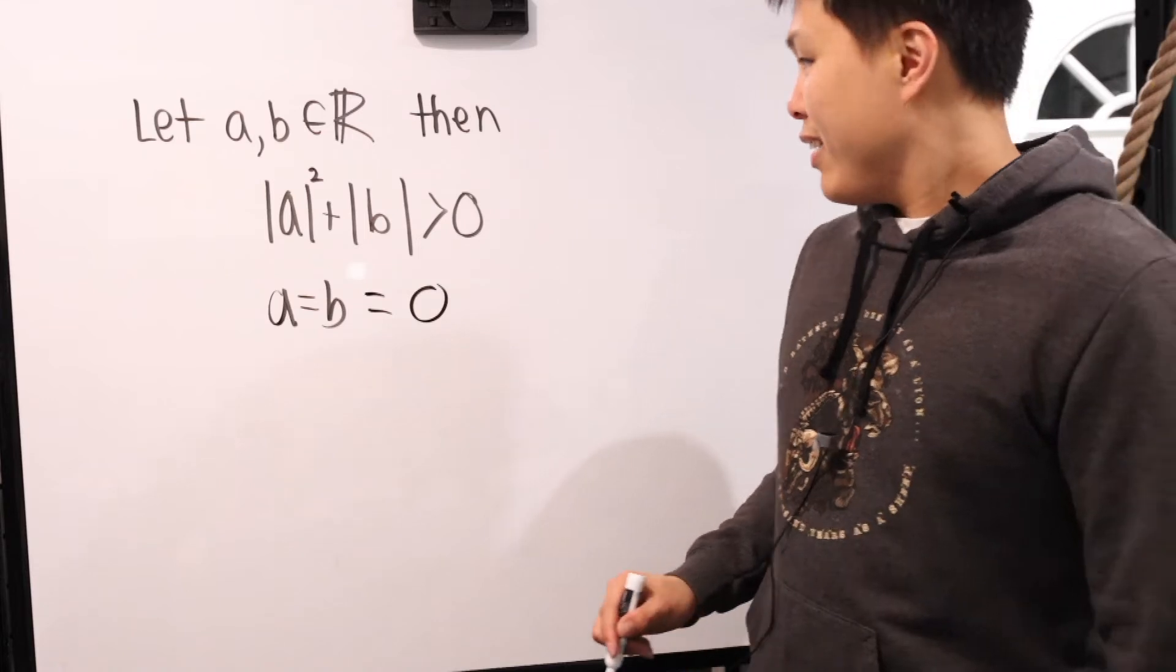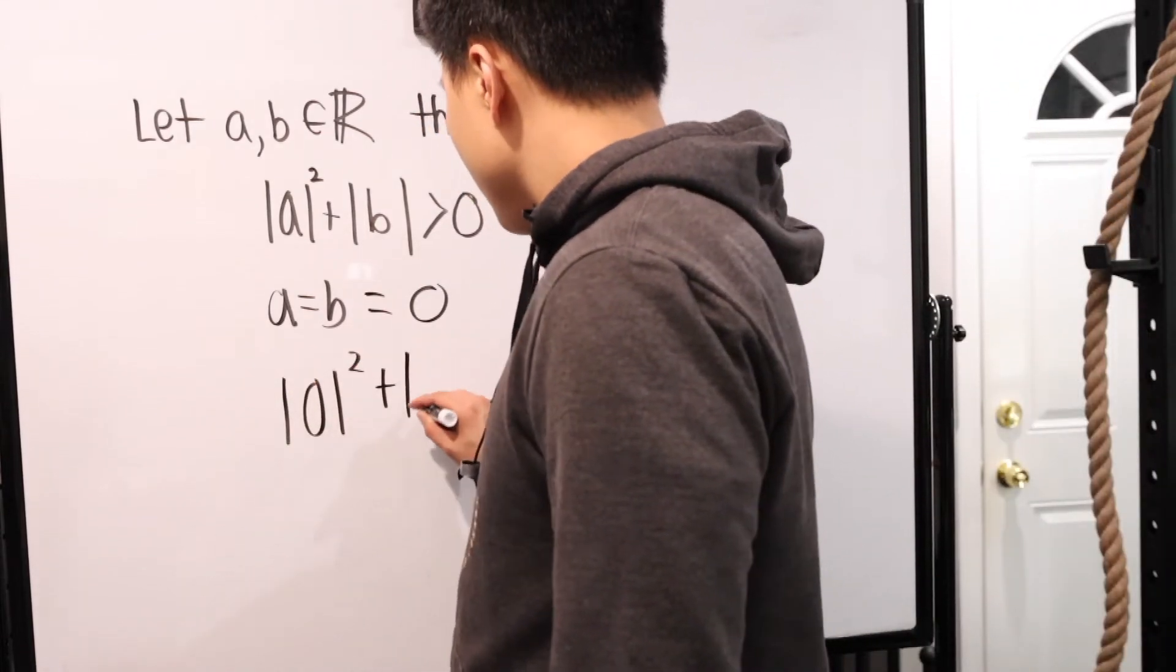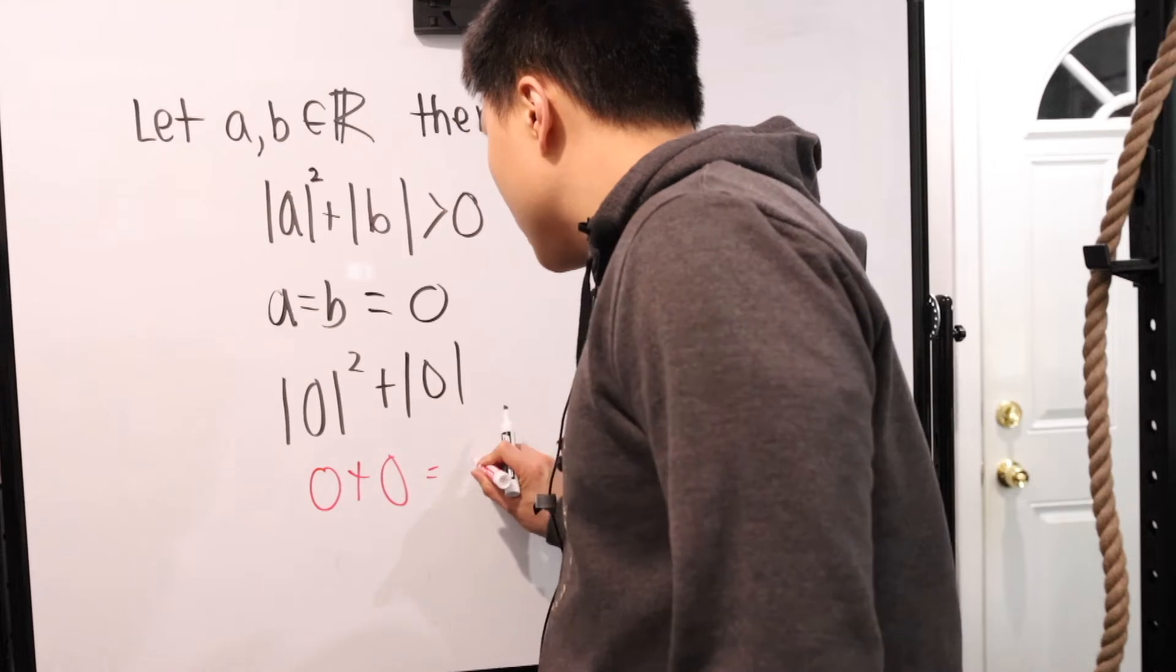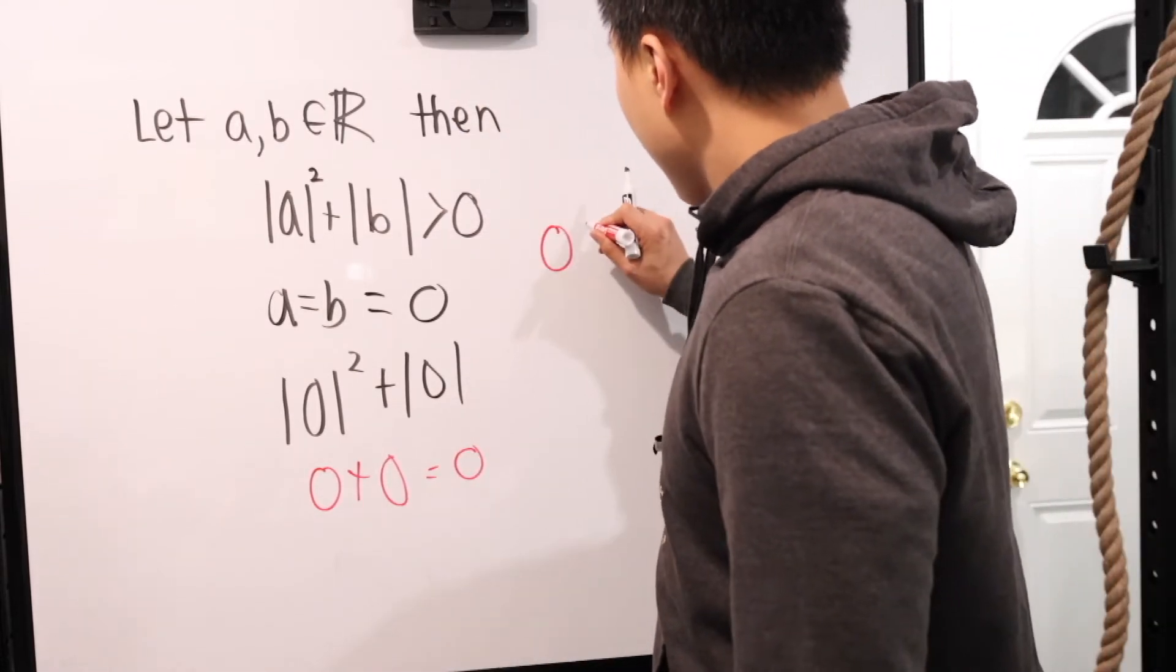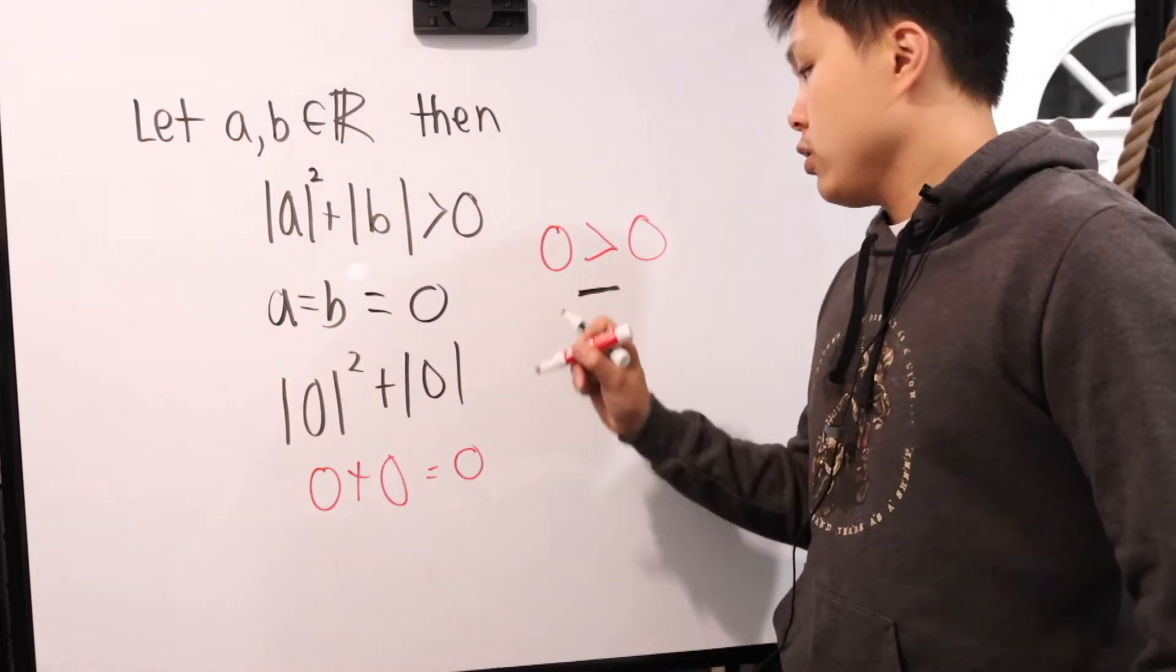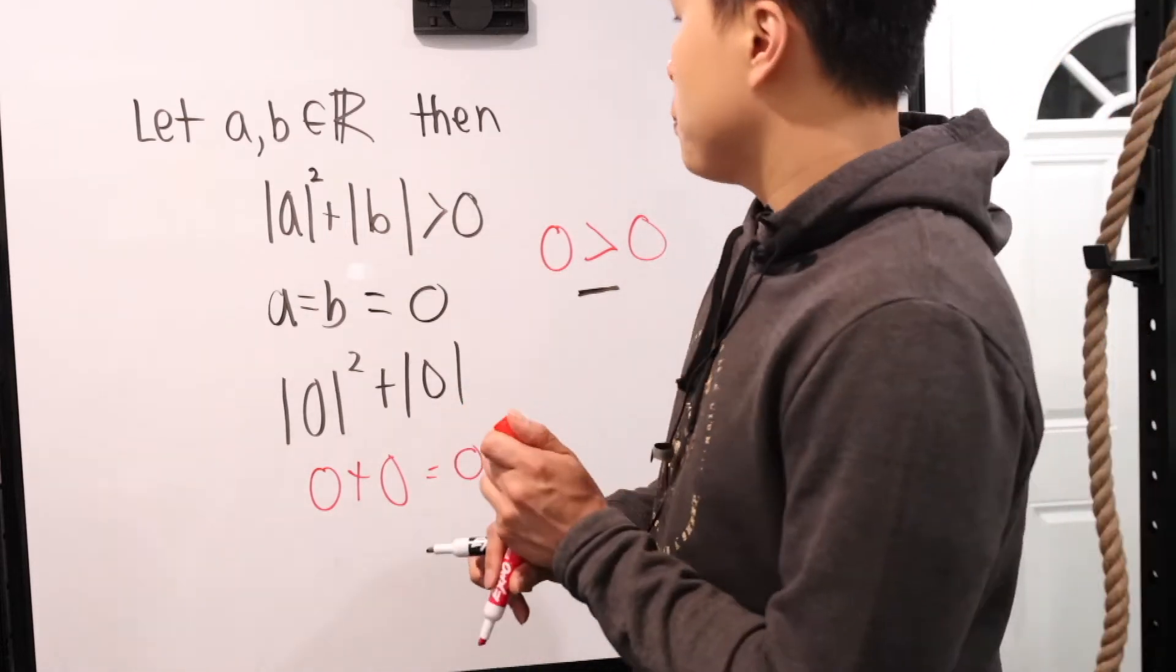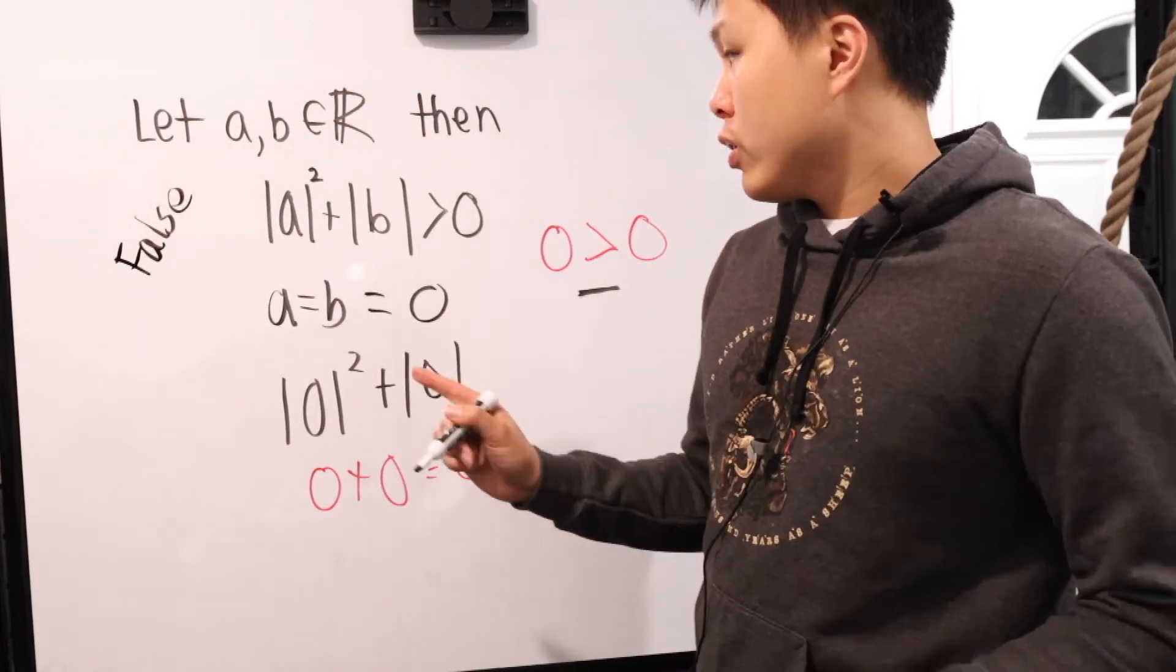What happens then? In this case, the absolute value of zero squared plus the absolute value of zero, which hopefully at this point, even though the absolute value, there's zero, it's basically zero plus zero, which is zero. And luckily for us, zero cannot be greater than zero. That's a contradiction. And of course, we're going to make a little face right here too. This is a contradiction. Doesn't work. Zero is only equal to zero. So therefore with this, we can still prove that this statement is false.